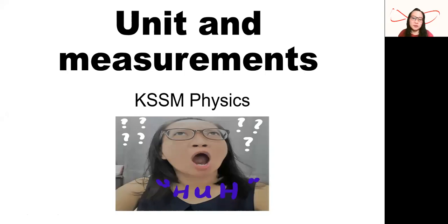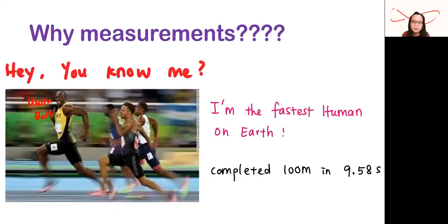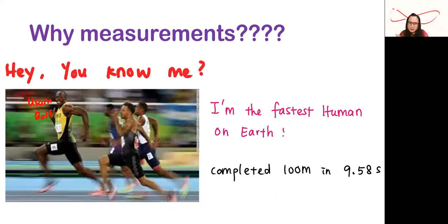So do you know why measurements are so important? Let me give you some examples to show you the importance of measurements. Look at this picture — do you recognize this person? He is the fastest man on earth. His name is Usain Bolt. He could complete 100 meters in 9.58 seconds, not even 10 seconds. If we don't have measurements, how do we measure the 100 meters, or the time taken, to denote him as the fastest man on earth?